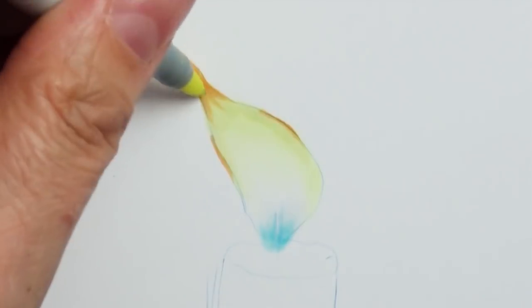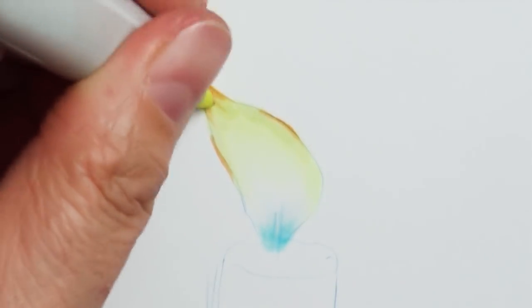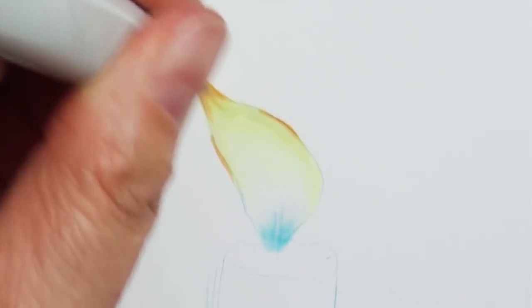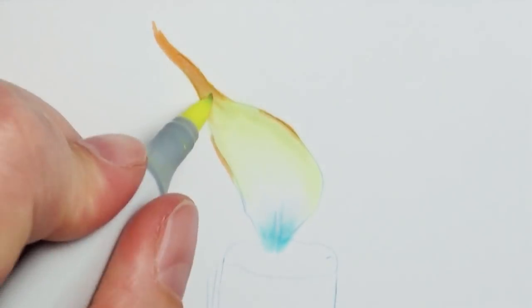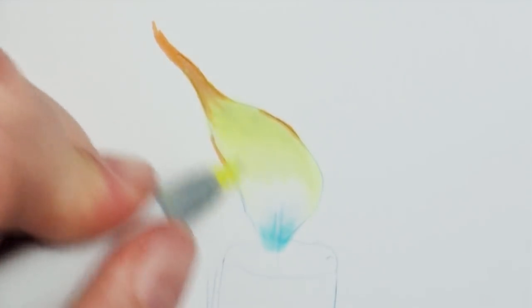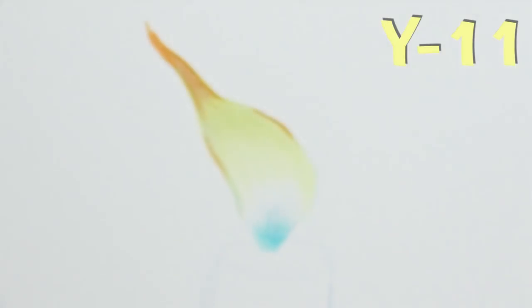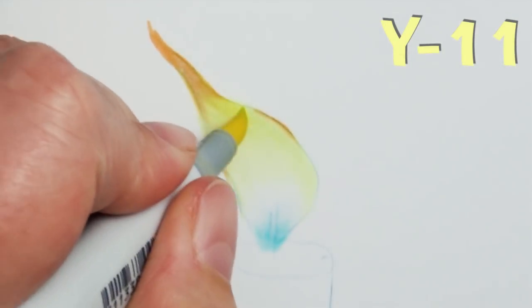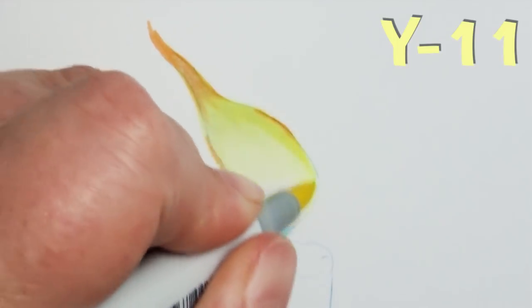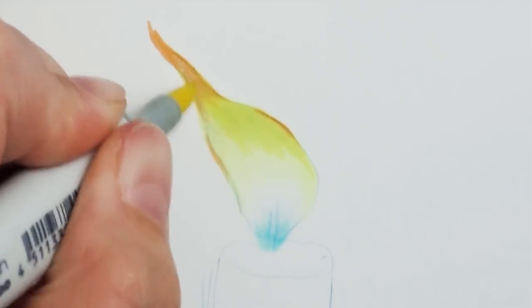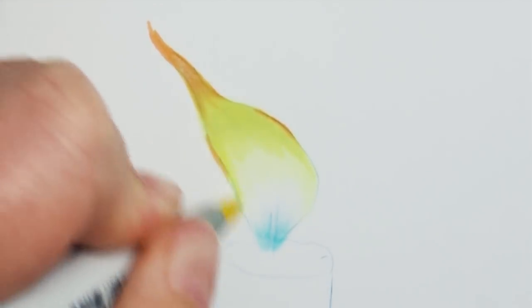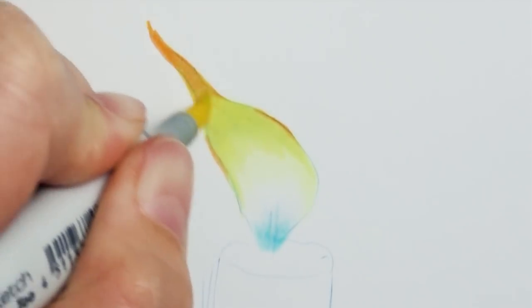Once we lay that darker color in we're going to begin blending that out with that light shade, that Y000. After I blend that in, now I'm going to begin laying in just slightly darker colors and building up the intensity. So for this next one I'm using a Y11 which is a nice pale but has a little bit of yellow to it. It's not my brightest yellow but it's starting to get there.